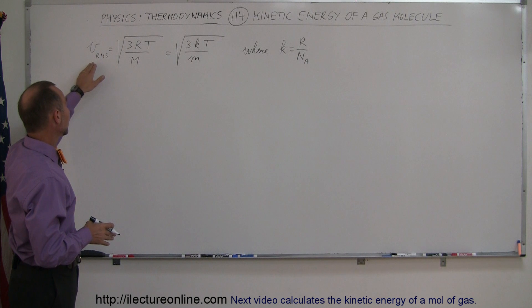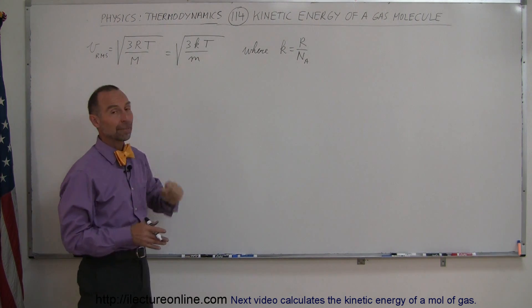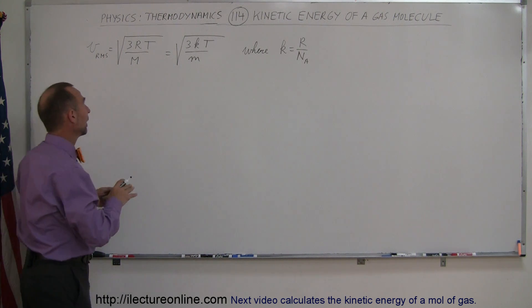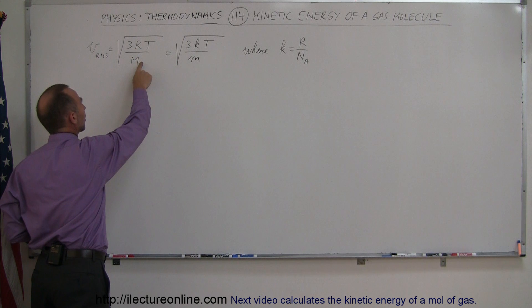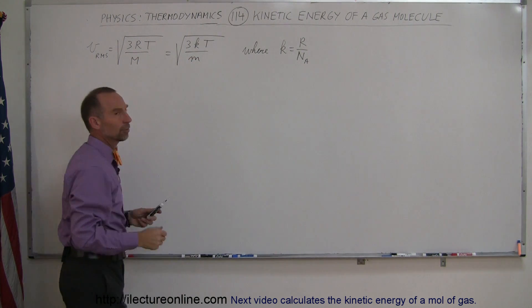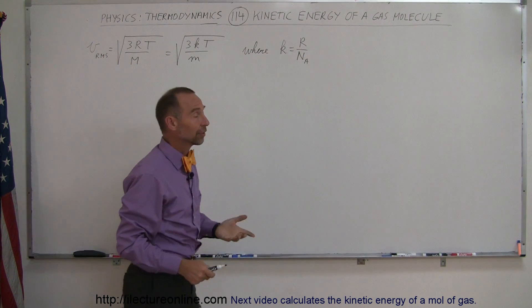So we start out with the equation for the root mean square velocity of a molecule which does depend on the temperature and the mass of the molecule. And by the way, so this would be in terms of the gas constant and the molar mass, this is equal to K divided by the molecular mass where K is simply the gas constant divided by Avogadro's number.